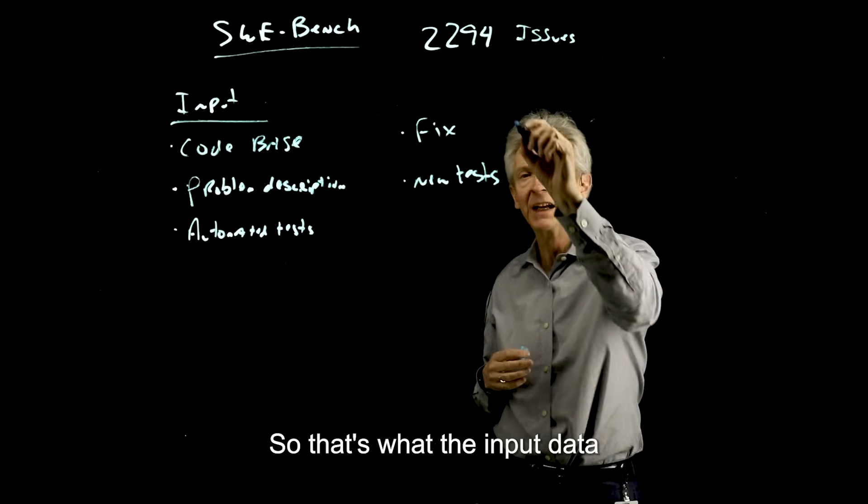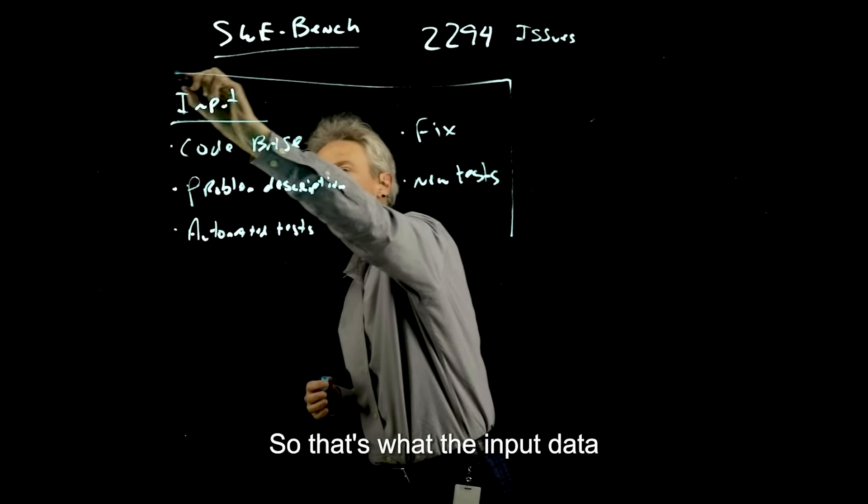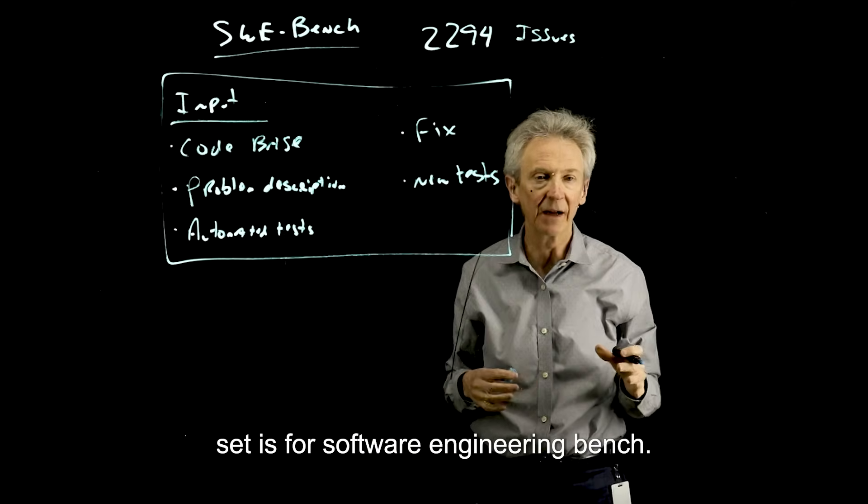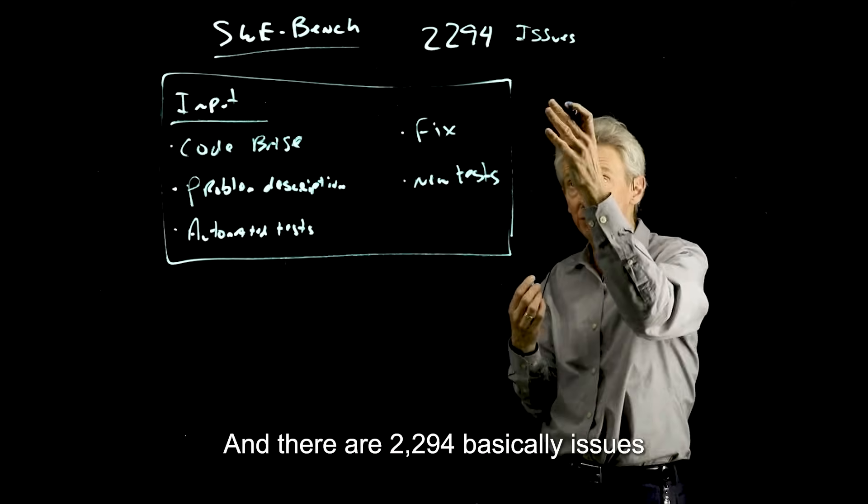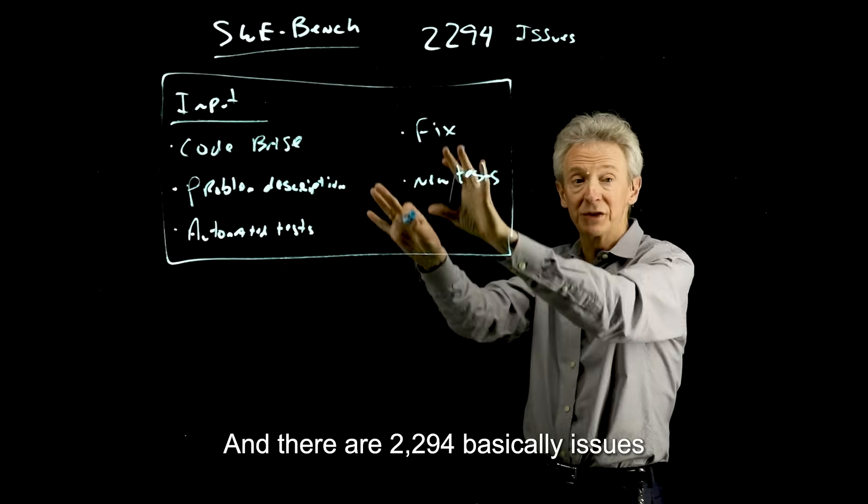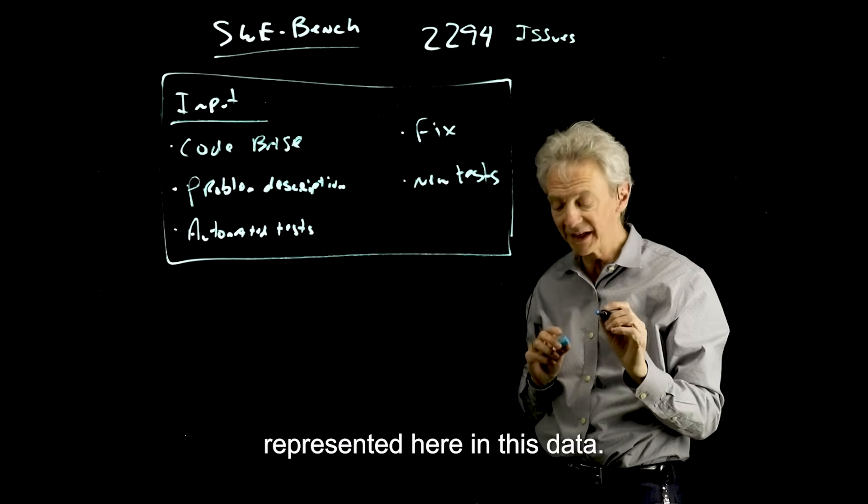So that's what the input data set is for Software Engineering Bench. And there are 2,294 issues represented here in this data.